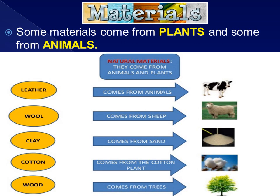Here are a few materials which can be obtained from plants and from animals. Leather comes from animals. Wool comes from sheep, camel, or goat. Clay comes from the sand. Cotton comes from the cotton plant. Wood comes from the trees.